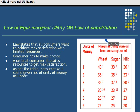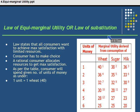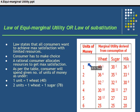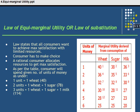The consumer has to make a choice to spend his limited resources in such a way where he can get maximum satisfaction. A rational consumer would like to allocate his resources to get maximum satisfaction. Let us see the table showing how the consumer will spend the money he has with him.